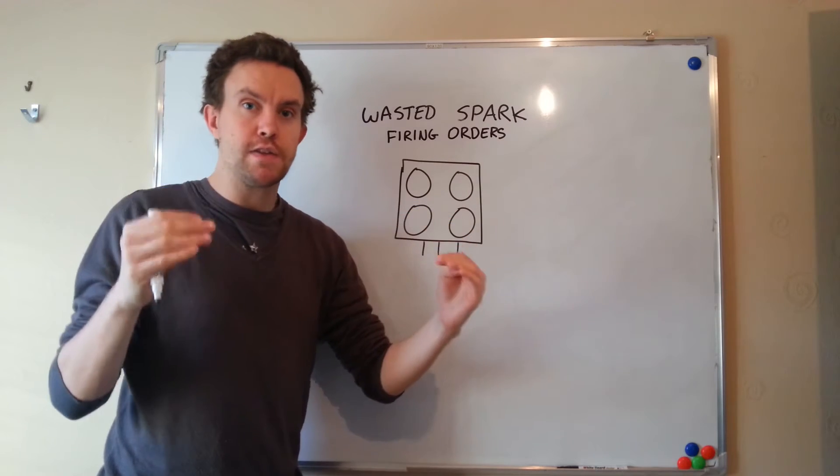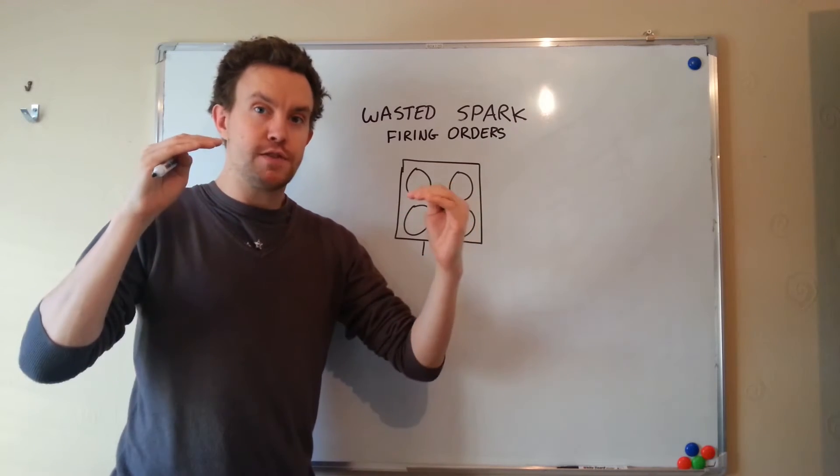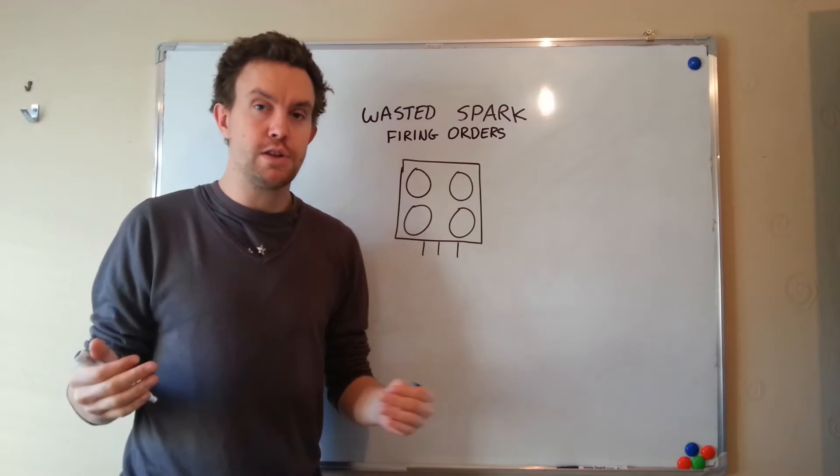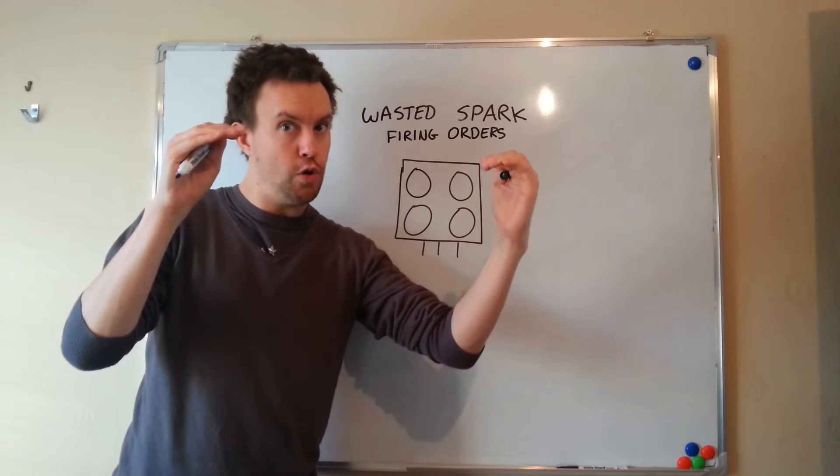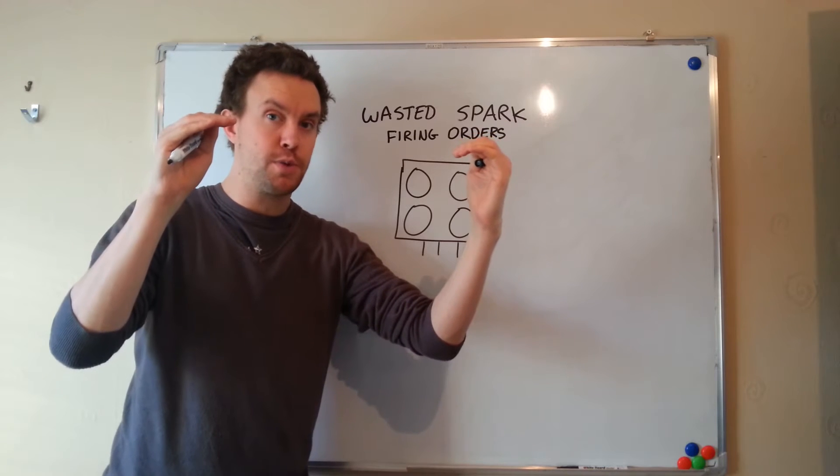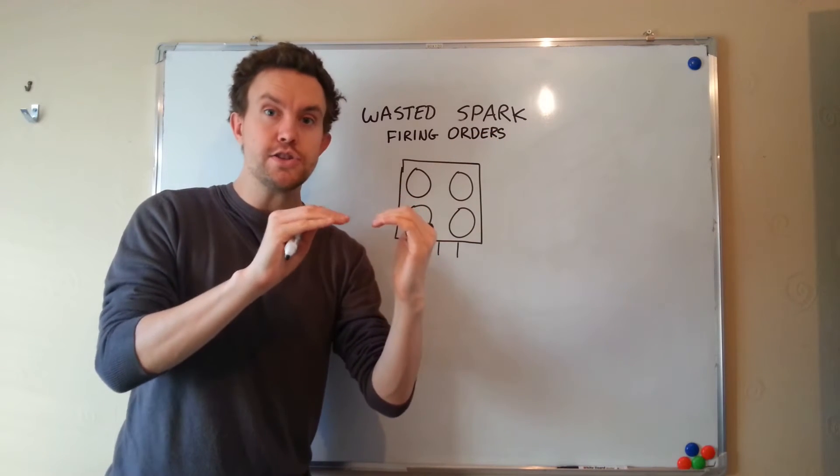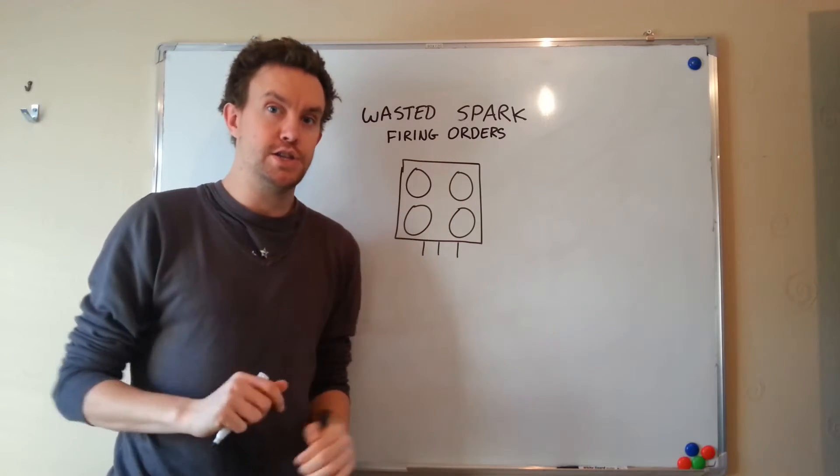So what we need to do first of all is we need to break the engine down into cycles. We have cycle A and cycle B. Cycle A on a standard four-cylinder engine would fire cylinders one and four because the pistons are both at the top at the same time. And cycle B would fire two and three, the inner two pistons, because they move up and down together within the engine.